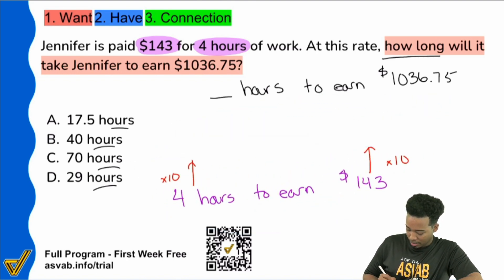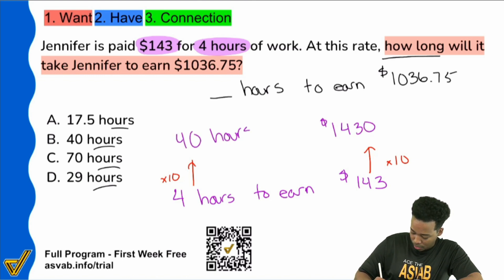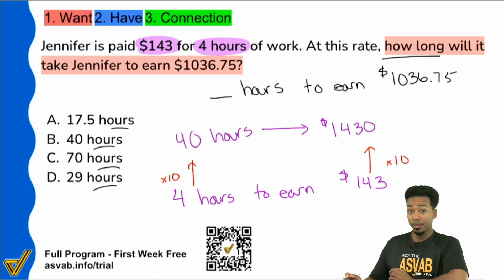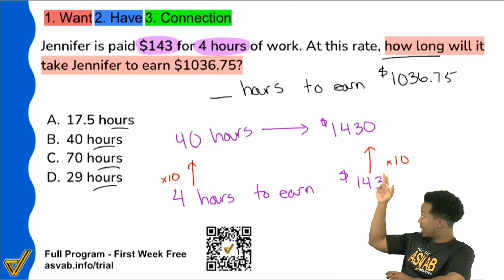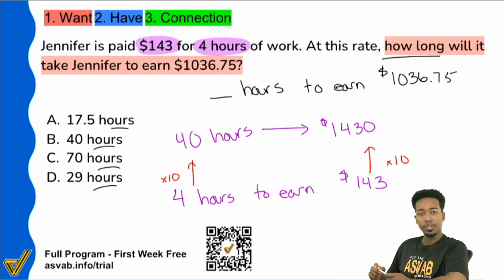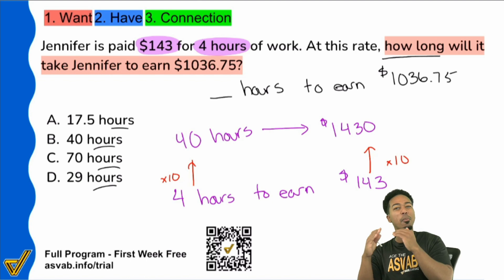well, that would end up getting me $1,430 and then four times 10 would be 40 hours. So this is a correct relationship. Like if we worked 40 hours at this rate, we would get $1,430.